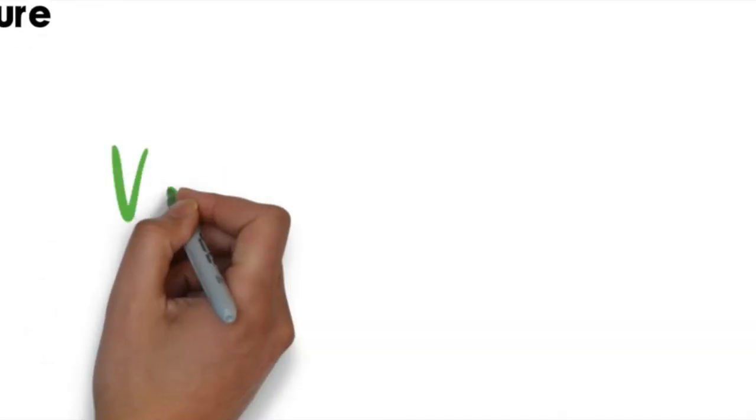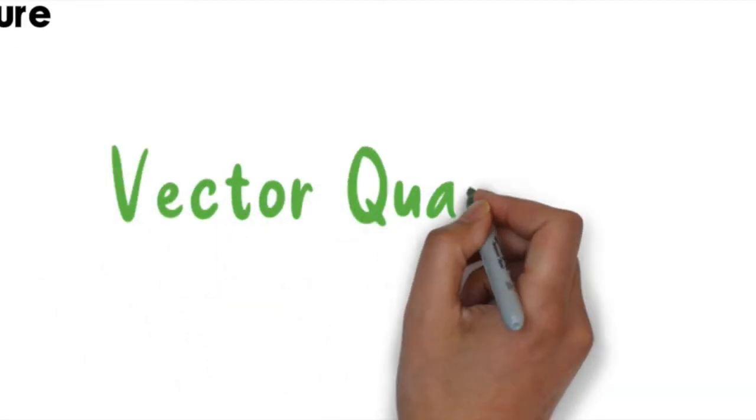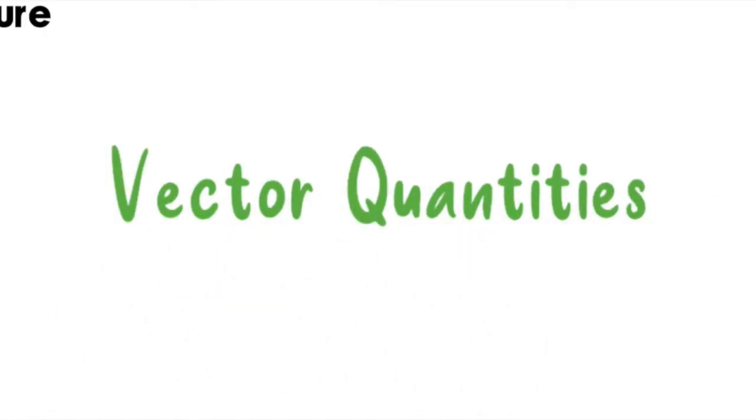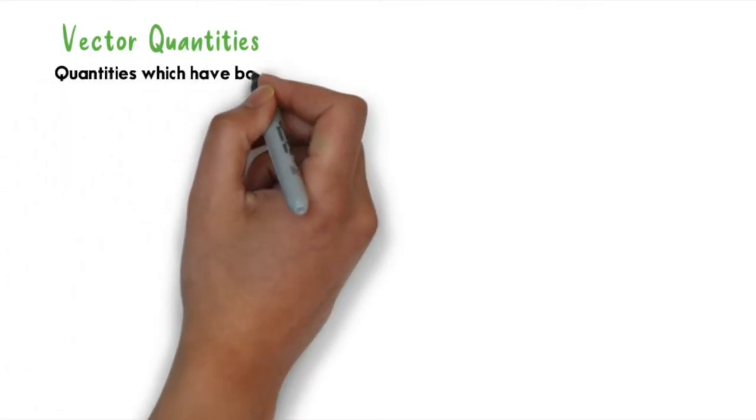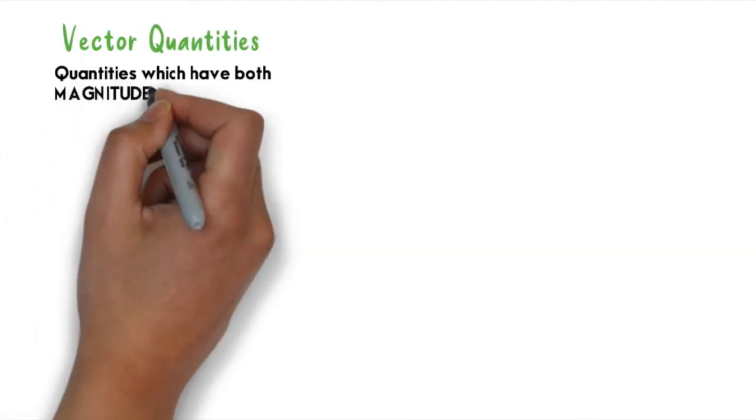However, it's not enough to just learn about scalar quantity, as in our daily life we need to know the direction. So let's move to vector quantities. Vector quantities are quantities which have both magnitude and direction.